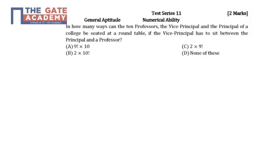Question is: In how many ways can the 10 professors, a Vice Principal, and the Principal of a college be seated on a round table if the Vice Principal has to sit between Principal and a Professor?